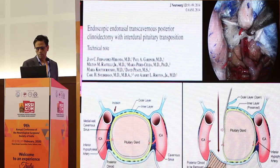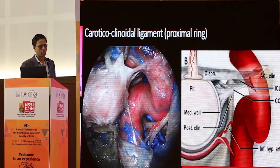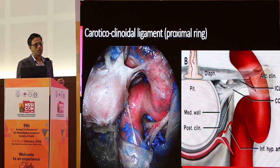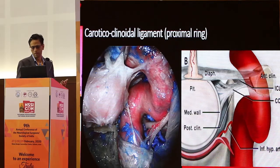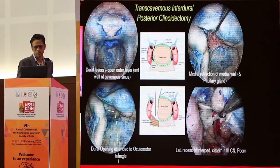This is one of the initial papers from Juan's group that outlined this technique. We talked about this ligament that is the equivalent of the proximal ring — that's where the middle clinoid is. Yesterday, when we talked about exposing the paraclinoid carotid, that's the key nuance: how to remove that bit of bone over this ligament so that you can do these procedures or access pituitary tumors that have gone into the cavernous sinus.